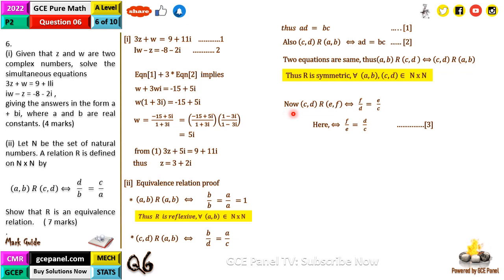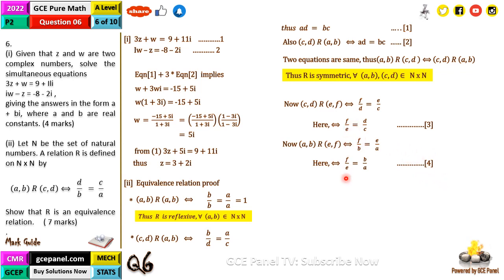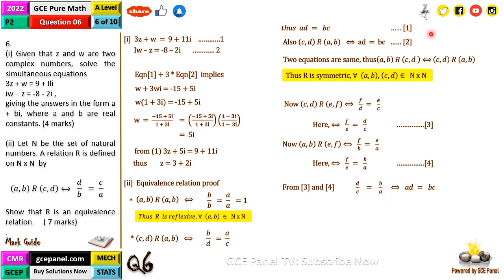Now test (a, b) relating (e, f) directly. This gives f over b equals e over a, so f over e equals b over a — call this equation four. From equation three, f over e equals d over c; from equation four, f over e equals b over a. Therefore d over c equals b over a, and cross multiplying gives ad equals bc, which matches equations one and two. Therefore (a, b) relates (c, d) and (c, d) relates (e, f) implies (a, b) relates (e, f).